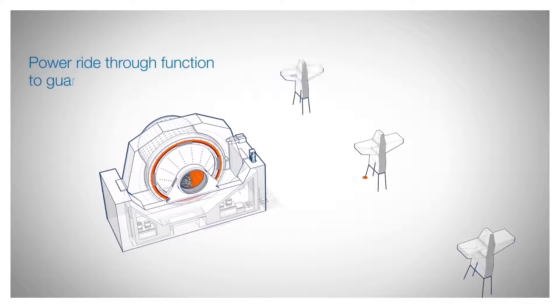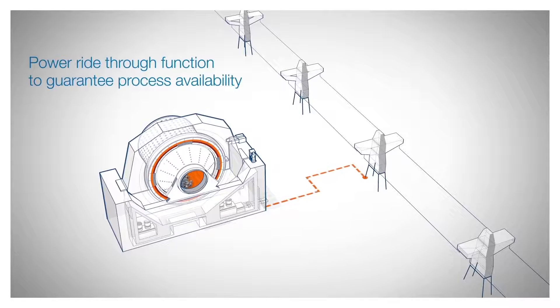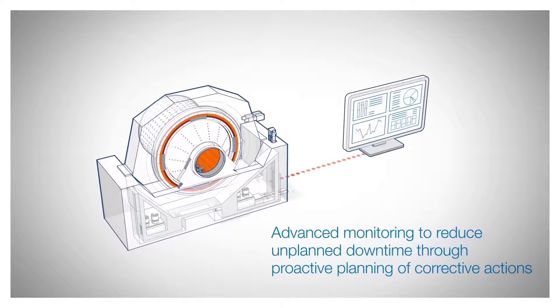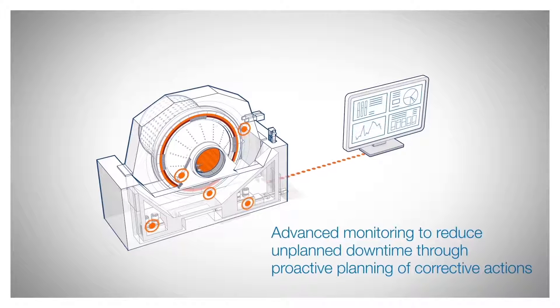The power ride-through function prevents the mill from stopping during short supply network unbalances. By gathering data from several sensors and applying smart analytics, advanced monitoring keeps you informed on the system's status and allows for proactive planning of corrective actions.